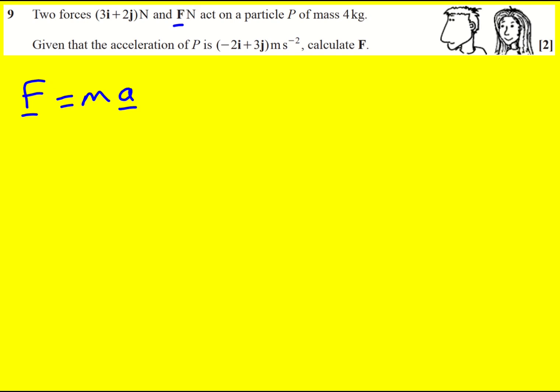So I'm just going to call it that for now but now the left hand side is in fact going to be 3i plus 2j plus F where F is this vector here, and that is going to equal 4 times minus 2i plus 3j.